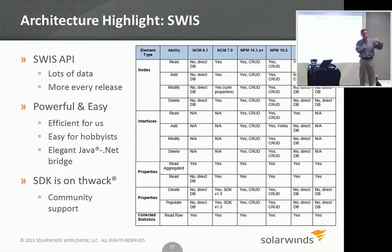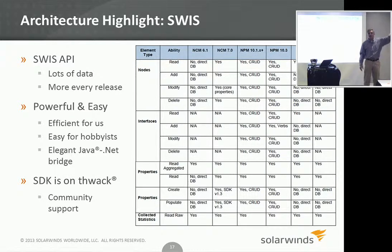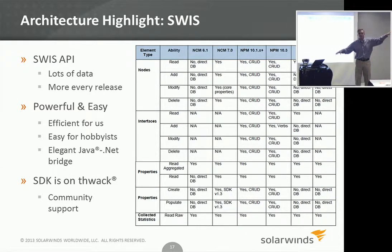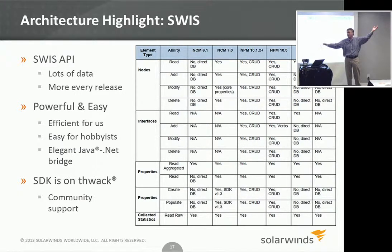One automation use case involves people who have an inventory system — usually a homegrown system. They just don't want Orion to discover their network. Why would they? They already have a discovery they trust and have their list of nodes figured out in a different system. So they use this API to feed that information from an external source into Orion and say: here's your list of nodes, now go manage them.